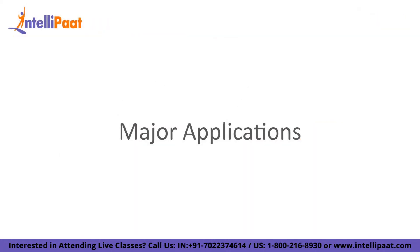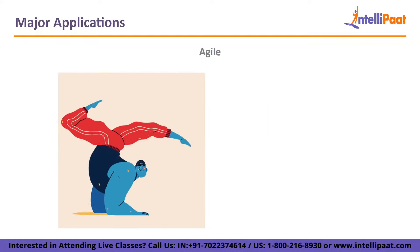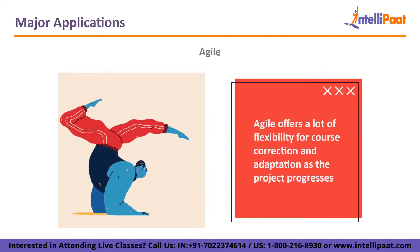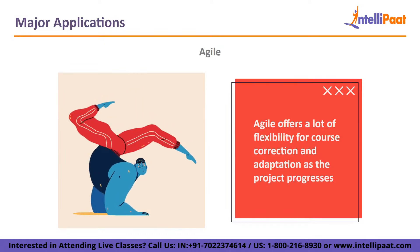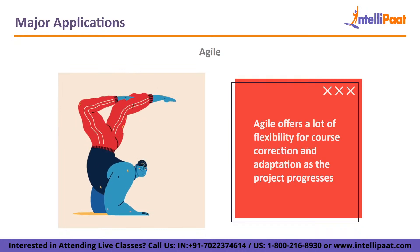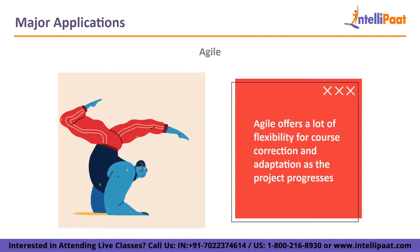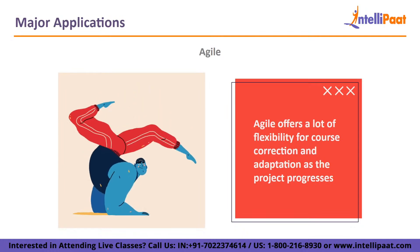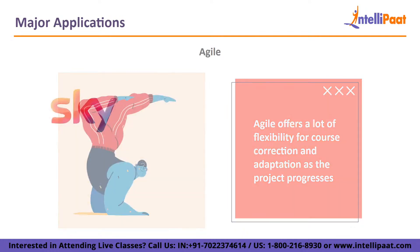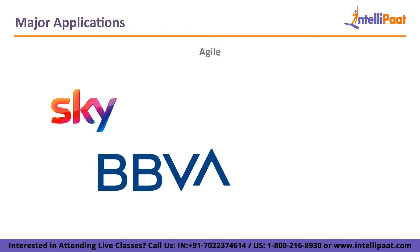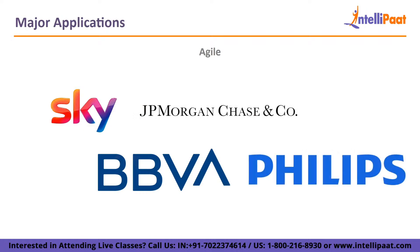Now let's go through some of the major applications. Agile offers a lot of flexibility for course correction and adaptation as the project progresses. It works well for projects whose outcome could require additional investigation or testing, and where stakeholders are actively involved at every stage. The budget may also change with Agile due to this flexibility. Example companies where Agile has been used include Sky TV, BBVA, JPMorgan Chase and Company, and Philips.